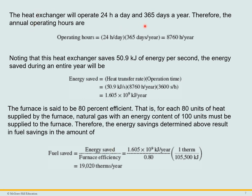Since this heat exchanger will operate 24 hours a day, 365 days a year, that's 8,760 hours per year. Knowing that this heat exchanger saves 50.9 kJ/s of energy, we can find the energy saved per year by multiplying by the number of seconds in a year using the appropriate conversion factors. The furnace is 80% efficient, so for each 80 units of heat supplied by the furnace, natural gas with an energy content of 100 units must be supplied.